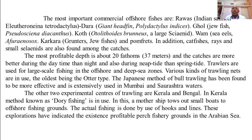The most important commercial offshore fishes are Ravas (Indian Salmon), Dara including giant threadfin (Polynemus indicus), Ghol (Jew fish), Koth, Vam (Sea Eel), Karkara, Grunters, Jew fishes, and Pomfrets. In addition, catfishes, rays, and small sciaenids are also found among the catches. These are important species harvested from offshore fisheries.